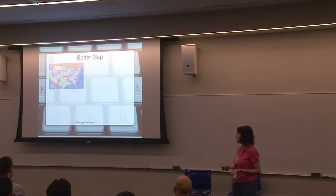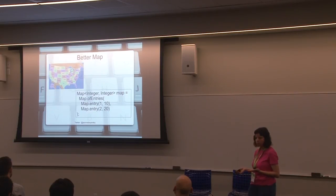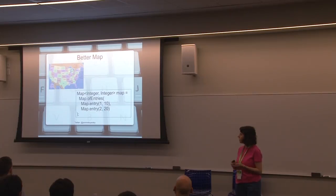Luckily, there's a better way. This is a map of the United States. It's in pretty colors. That proves there's a better way. You can call map of entries, which allows you to pass in those entry pairs of keys and values. It's very obvious looking at this code. You don't have to start counting and thinking whether something is a key or a value. It's just a pair. That's pretty nice.